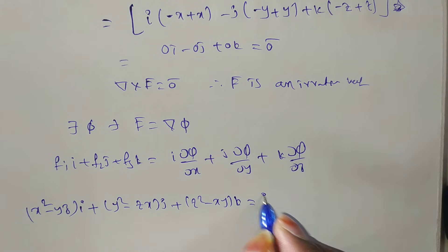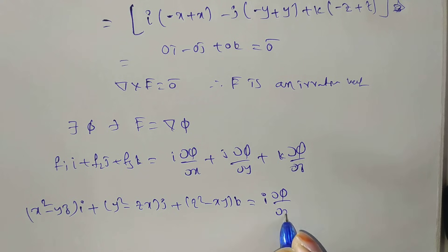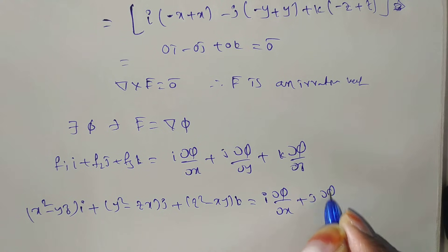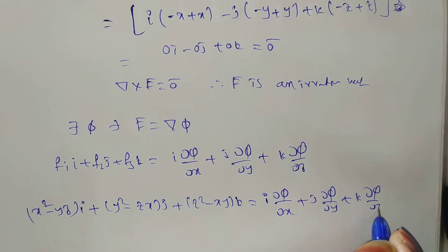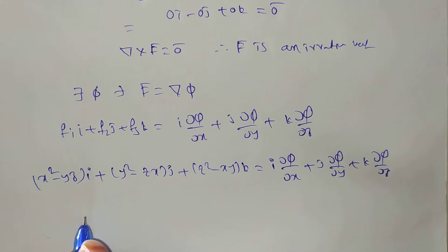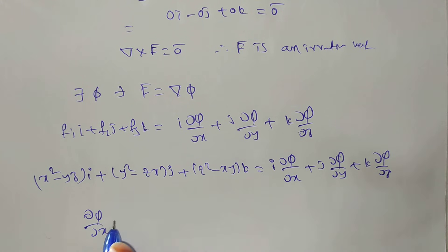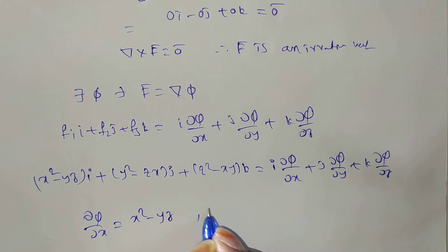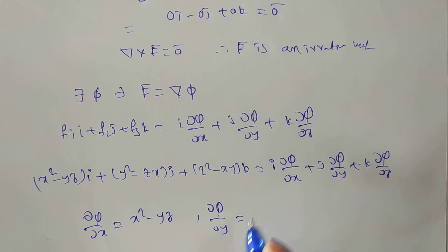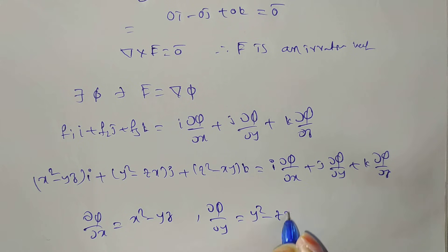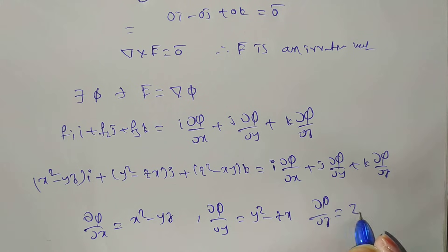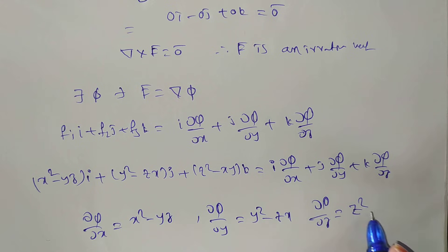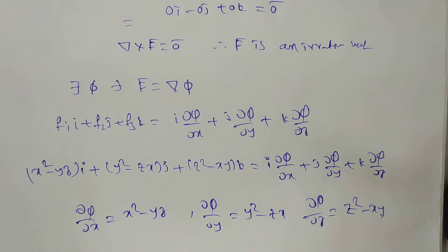Comparing components: ∂π/∂x = x² − yz, ∂π/∂y = y² − zx, and ∂π/∂z = z² − xy (comparing the k-component).